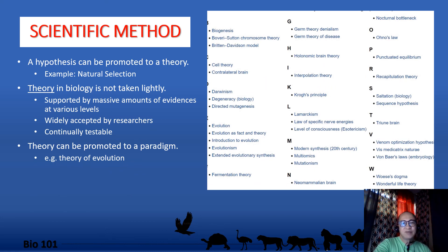When a hypothesis is capable of explaining a wide variety of related phenomena, it is promoted to a theory. Theories in biology are not taken lightly — they are supported by massive amounts of evidence at various levels of different fields of biology and other sciences. A theory is widely accepted by researchers around the world and is continually tested and verified. When a theory revolutionizes research and understanding of a universally observed phenomenon, it is promoted to a paradigm — essentially a new way of looking at things.